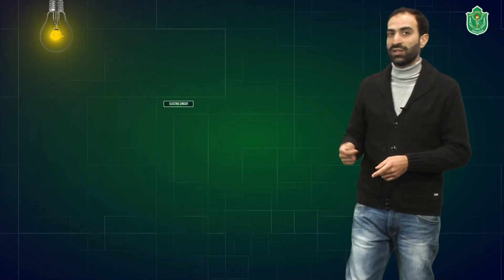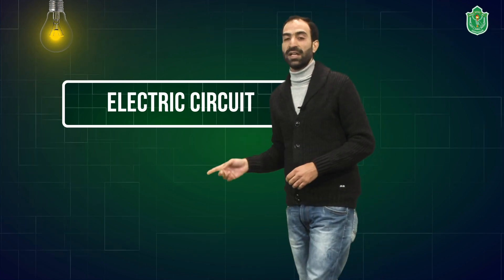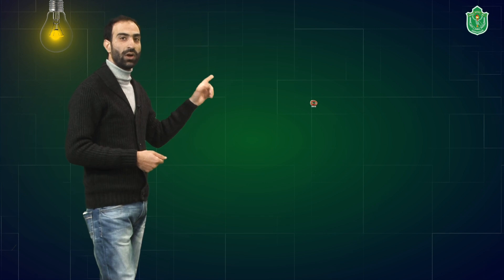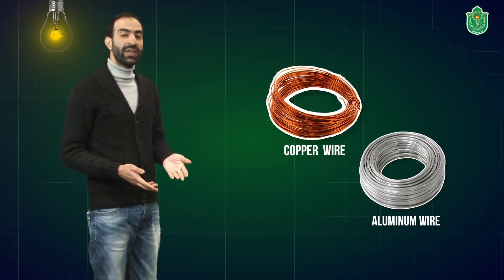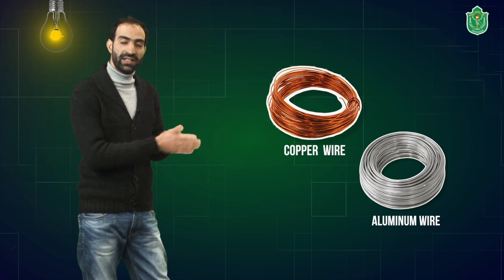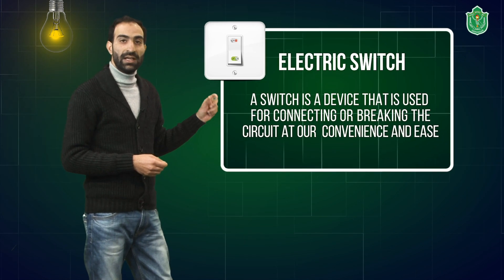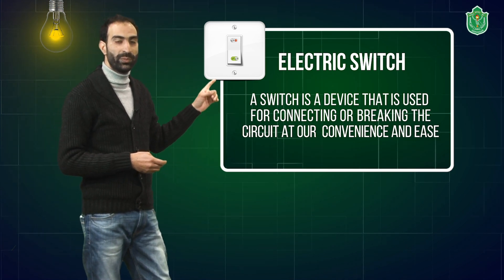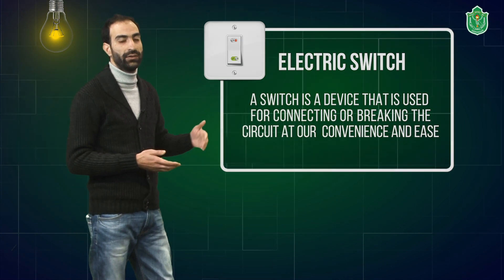This closed and complete path of electricity is known as an electric circuit. The electric circuit is made using a very good conducting material like copper or aluminum wire. In order to make our circuits more convenient and easy, we use an electric switch — a device used for connecting or breaking the circuit at our own convenience and ease.